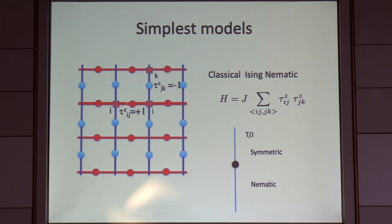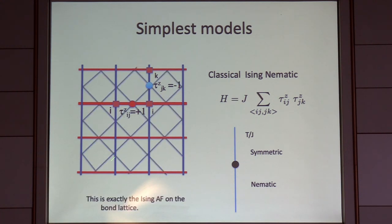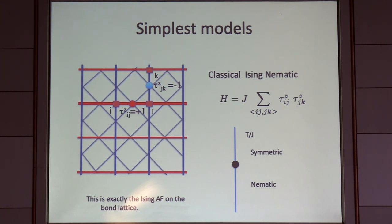On all the x-oriented bonds and tau-z equals minus one on all the y-oriented bonds. This state preserves translation symmetry but breaks the fourfold rotation symmetry of the system, so I'm allowed to call that a nematic state. This model has a phase diagram with a high-temperature symmetric phase and a low-temperature nematic phase. If you think of the square lattice of the bond sites, this is just the classical Ising antiferromagnet on the square lattice — a classical problem with an exact solution in two dimensions.